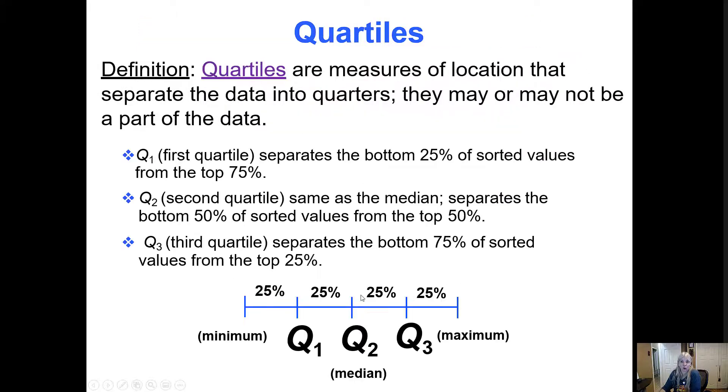And then z-scores. So quartiles, quarters, if you think about 25 percent, 25 percent, is how you would talk about the location of a data value.